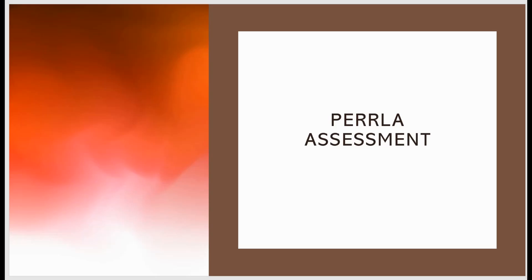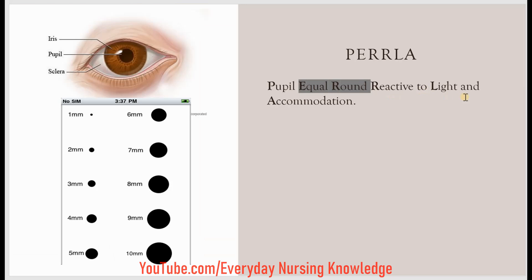Welcome to Everyday Nursing Knowledge Lectures. Today we will see how to assess PERLA. PERLA stands for Pupil, Equal, Round, Reactive to Light and Accommodation. Assessing PERLA is an important step of neuro assessment.